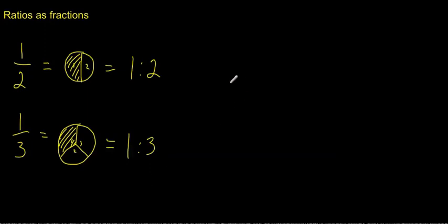For example, if we had something like four is to five, that would be written as a fraction. That would be written as four fifths because it's saying four out of five parts. Four is to five.